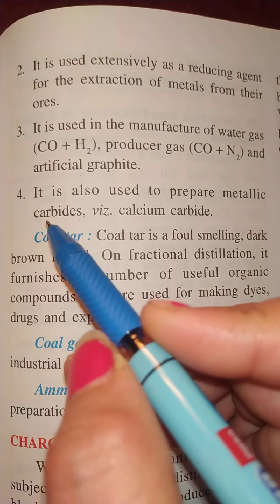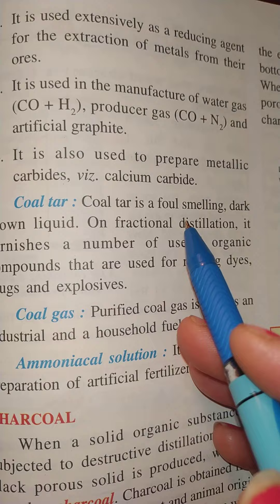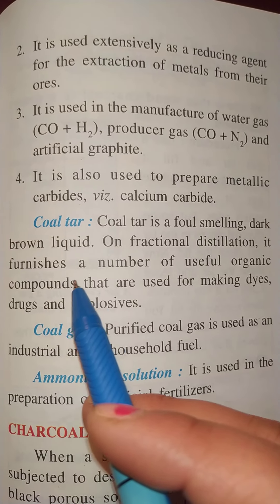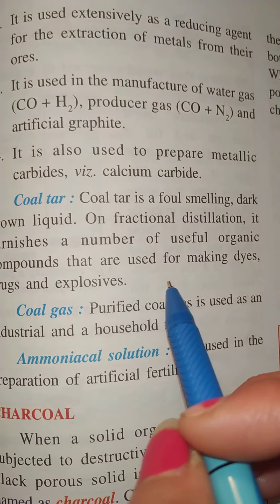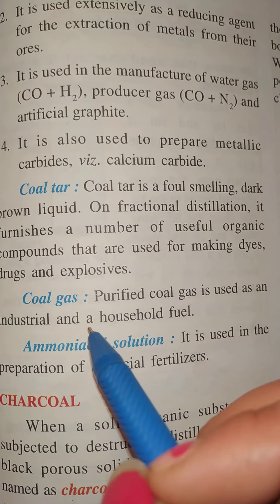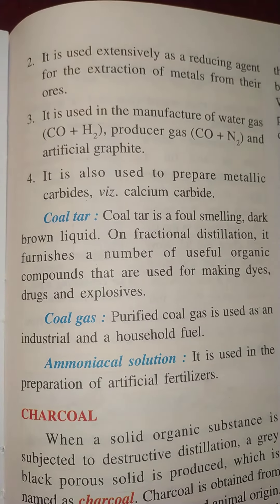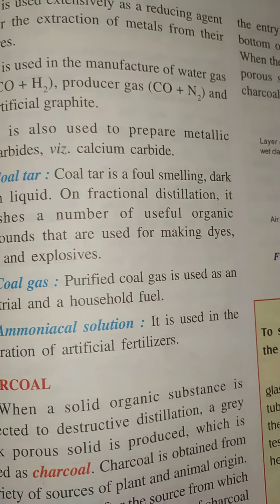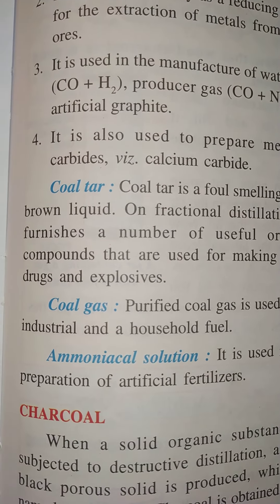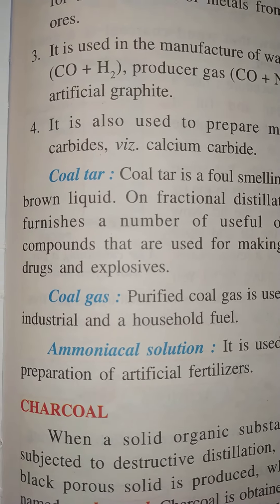Another product of destructive distillation of coal is coal tar. Coal tar is a foul-smelling dark brown liquid. On fractional distillation, it furnishes a number of useful organic compounds used for making dyes, drugs, and explosives. Next is coal gas, a purified gas used as an industrial and household fuel. Finally, ammonical solution is used in the preparation of artificial fertilizers. These are the different products obtained from the destructive distillation of coal.